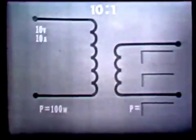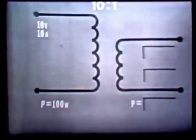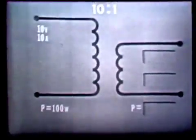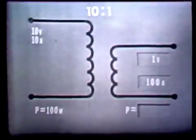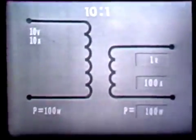The power in the secondary, however, would still be 100 watts. Now, let's suppose the same 10 volts at 10 amperes was applied to the primary of a step-down transformer with a turns ratio of 10 to 1. The power in the primary would again be 100 watts. The voltage induced in the secondary would now be one-tenth that in the primary: 1 volt. The current in the secondary would now be 10 times that in the primary: 100 amperes. The power in the secondary, however, remains at 100 watts.